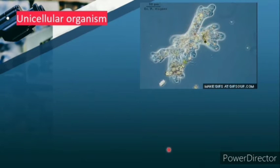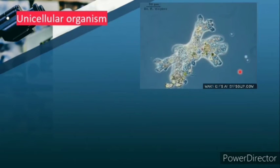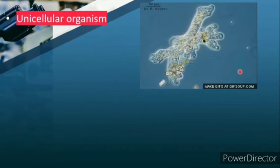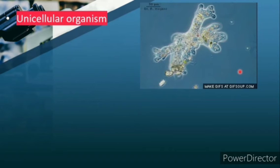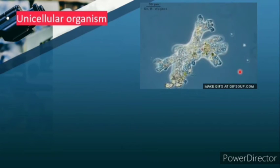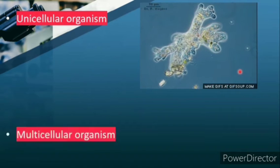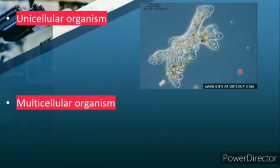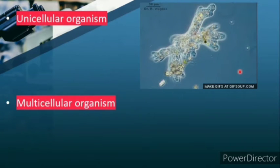The best example of a unicellular organism is amoeba. Amoeba performs all its life processes with the help of that one single cell itself - including nutrition, excretion, and all other life processes.